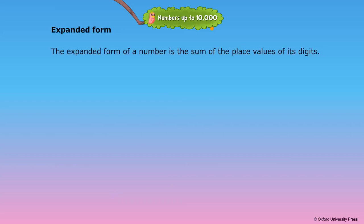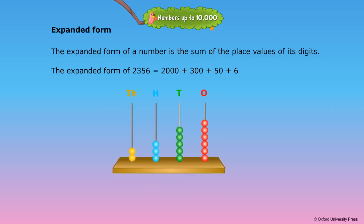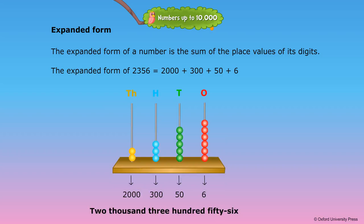Expanded form. The expanded form of a number is the sum of the place values of its digits. The expanded form of 2356 is shown. We can also show the same number 2356 on the abacus.